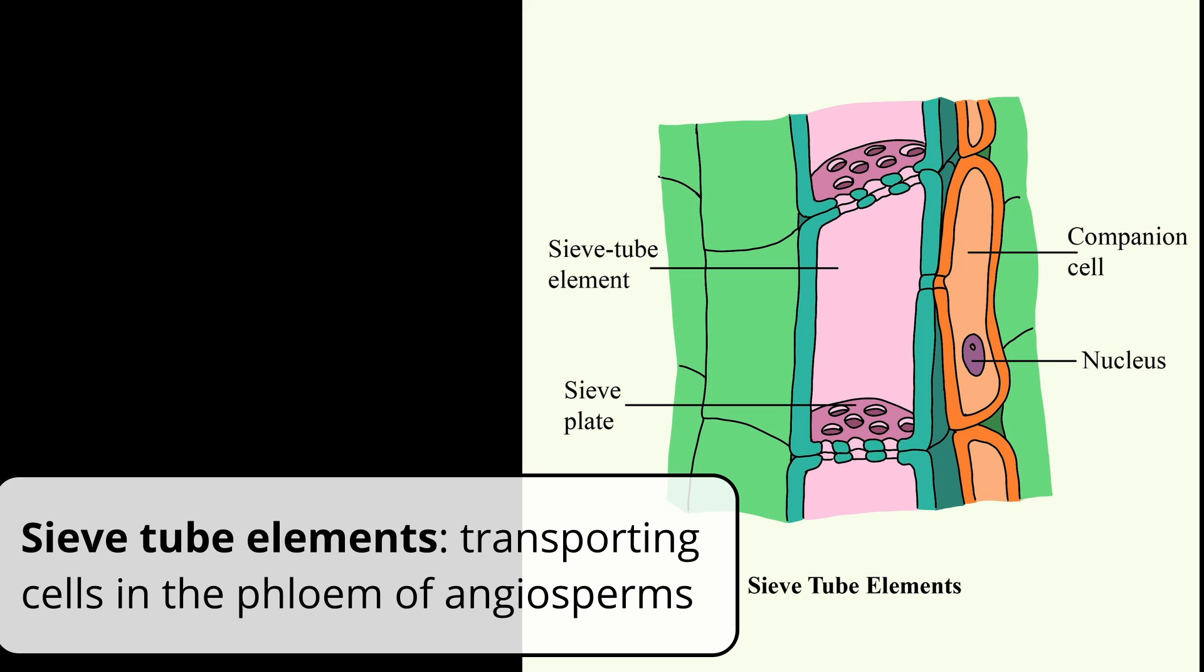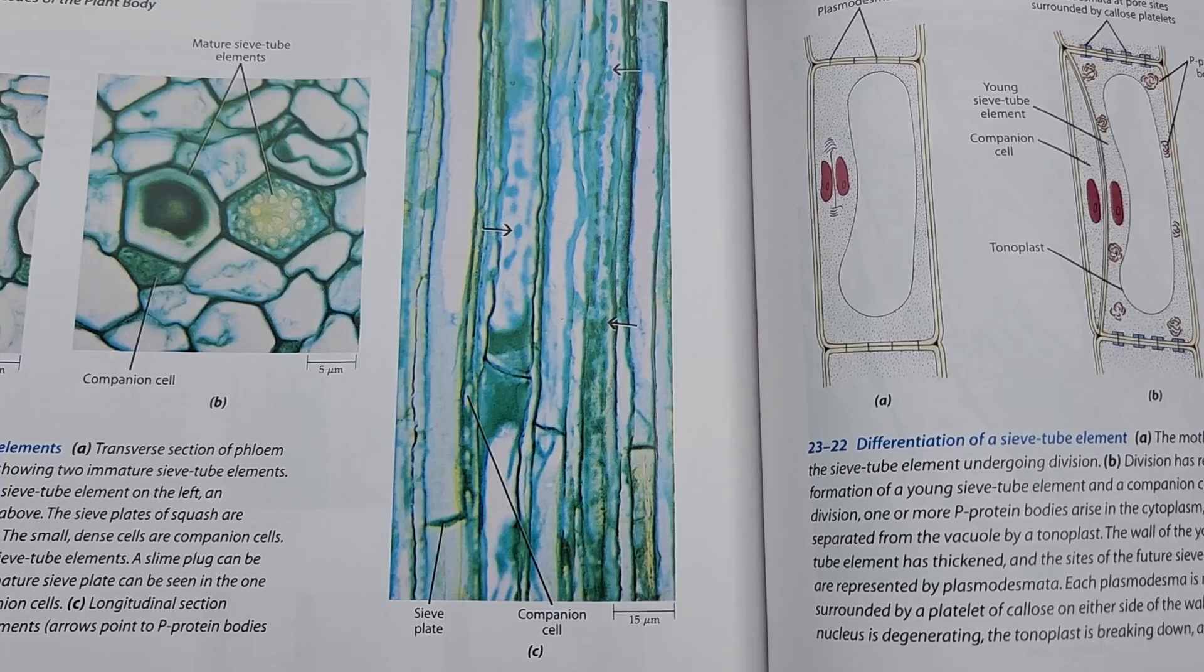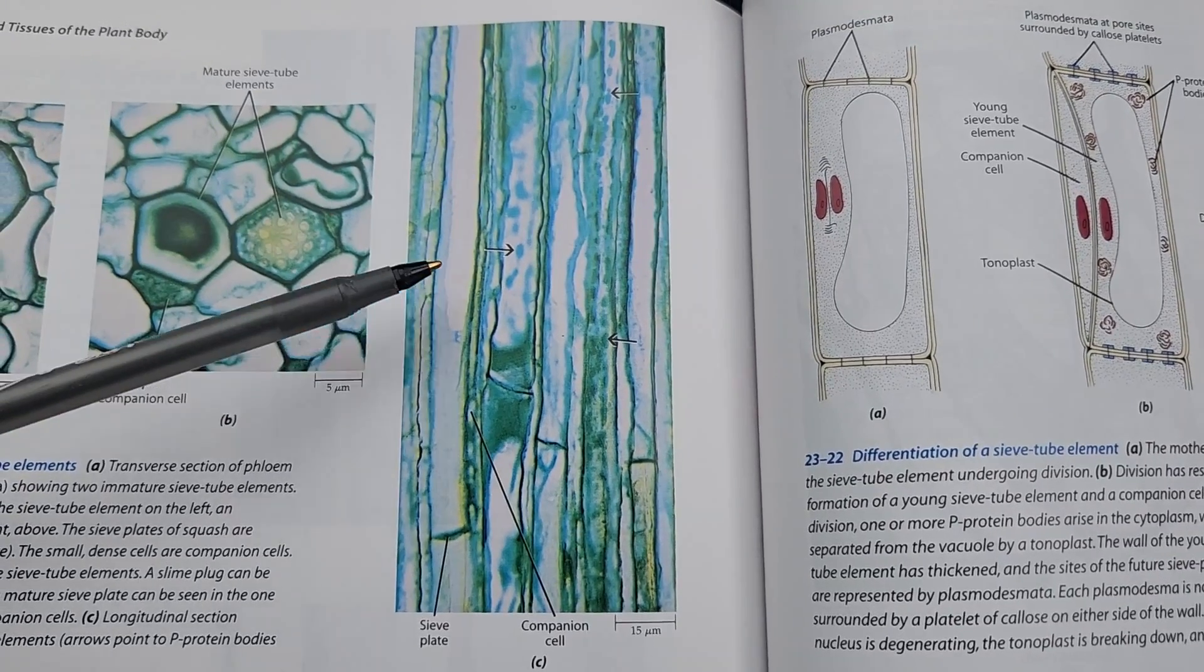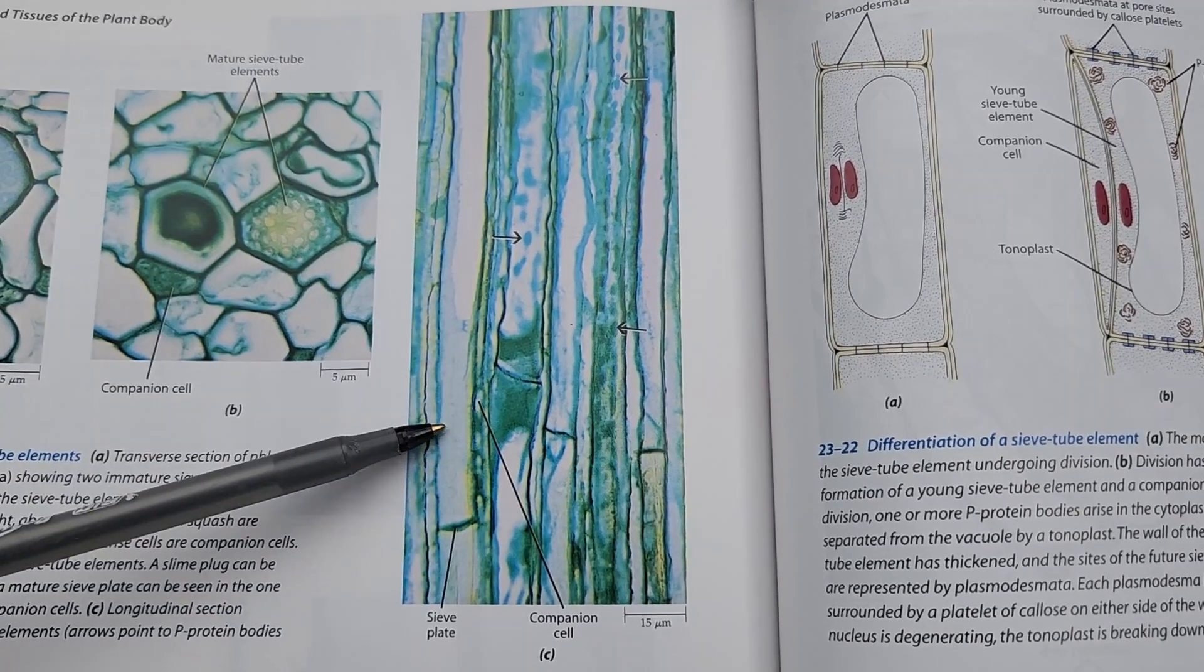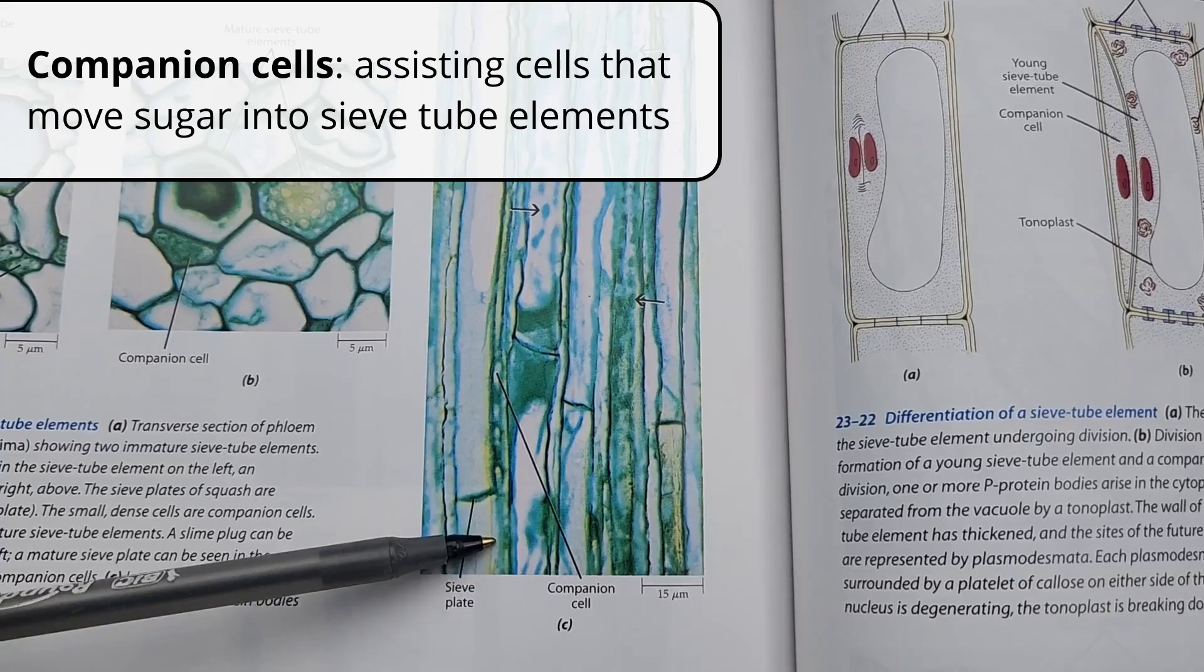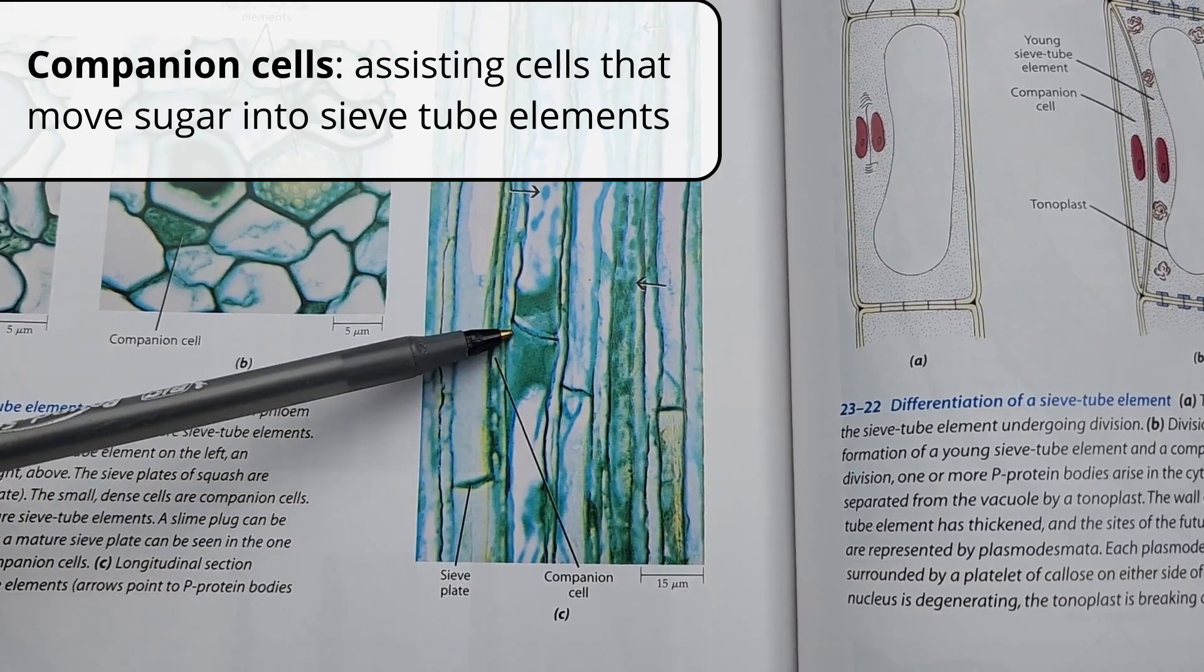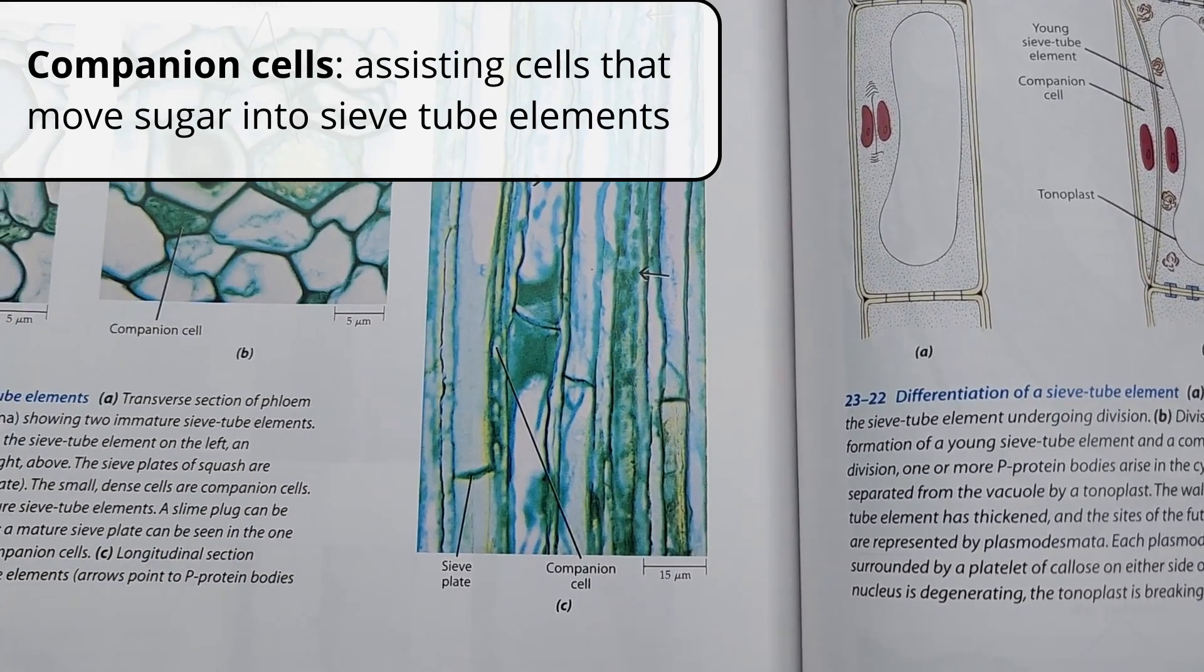First, the angiosperms. The cells here are called sieve tube elements. They're wider, squatter, and have more space for transport. They're not dead when they're mature, like xylem cells, but they don't have all their organelles or internal parts. So they're always associated with what's called a companion cell that helps load the sugar into the phloem.